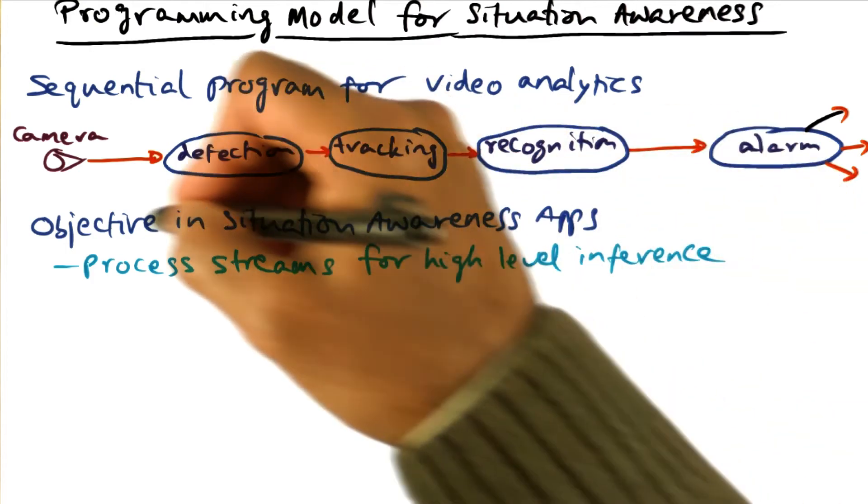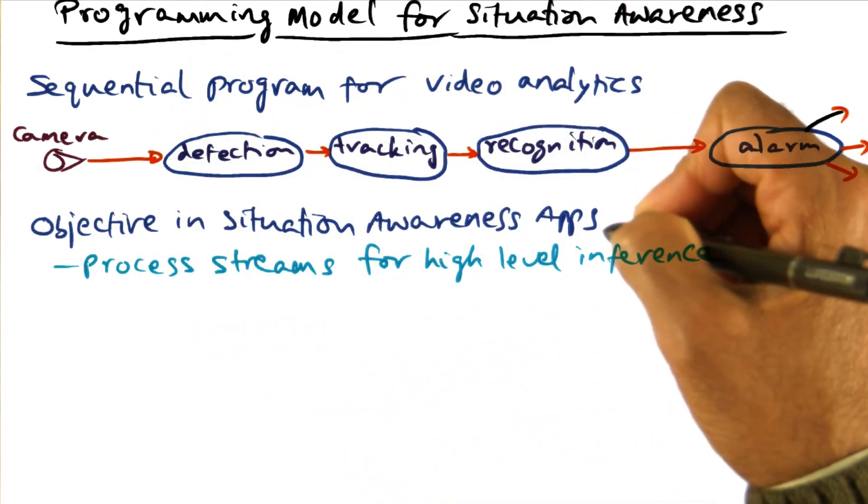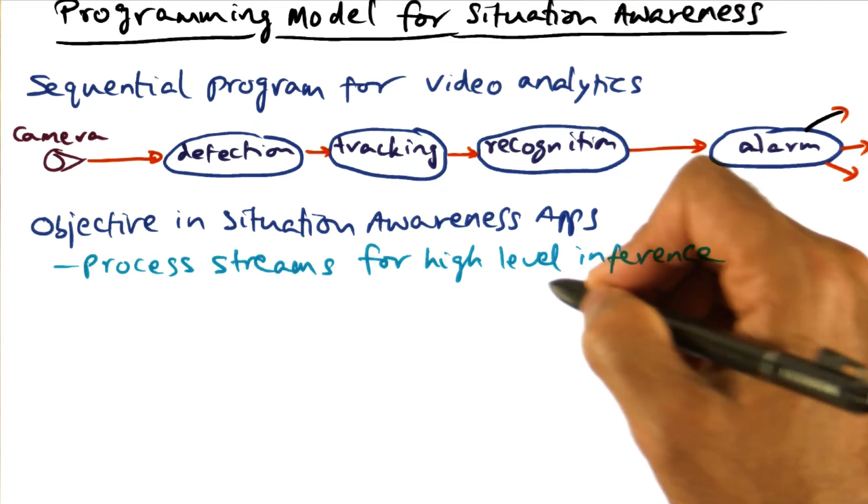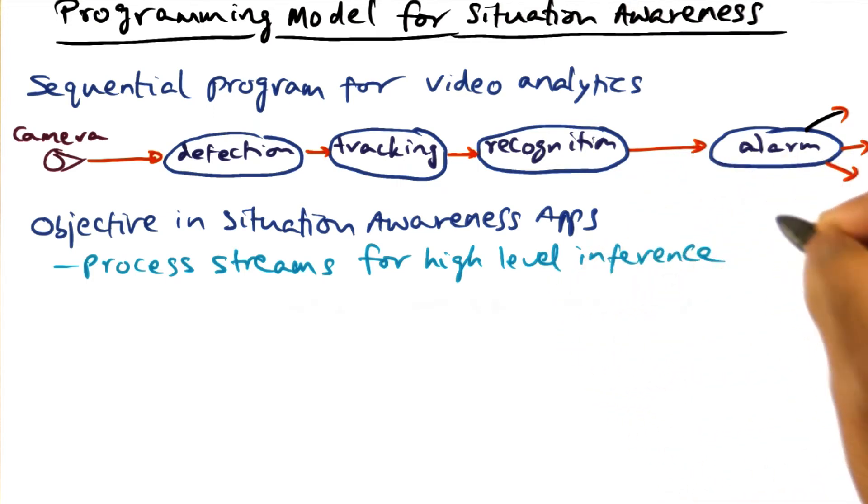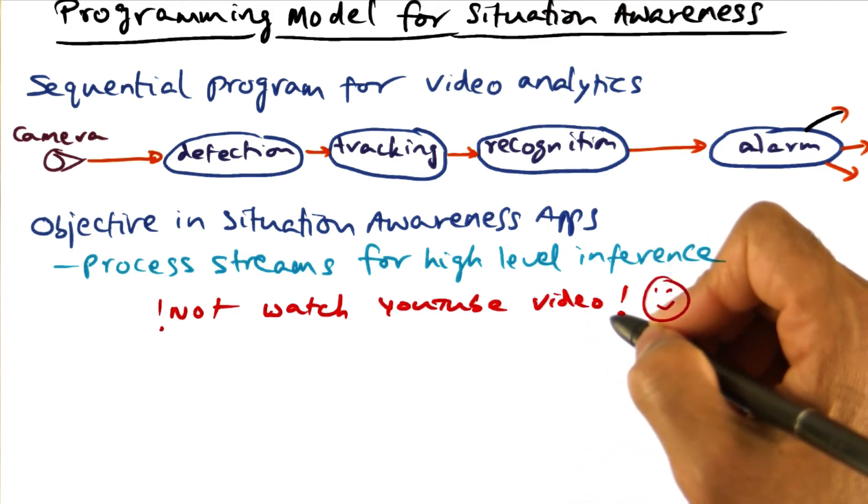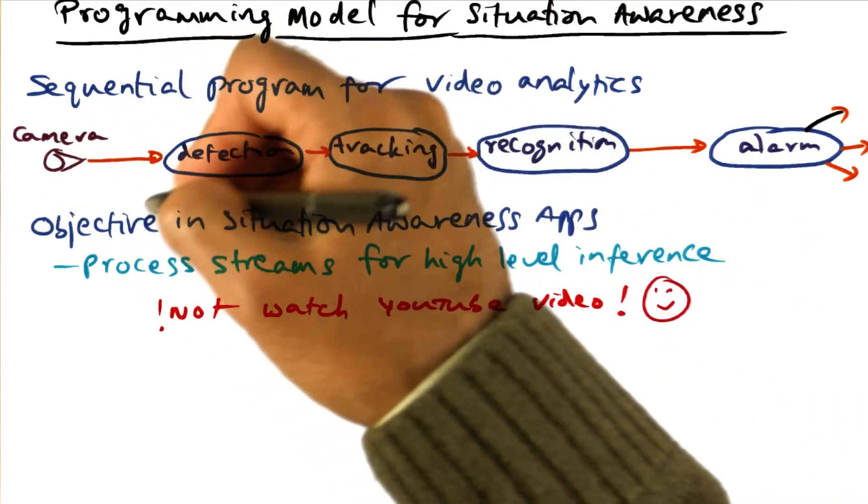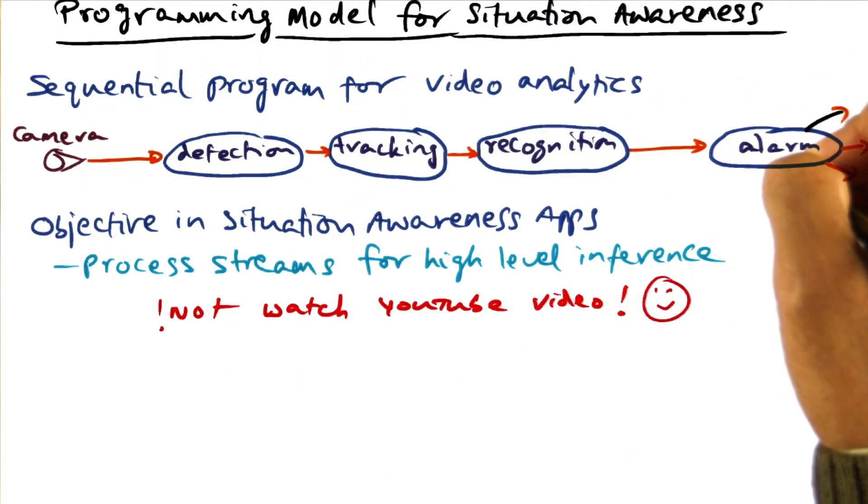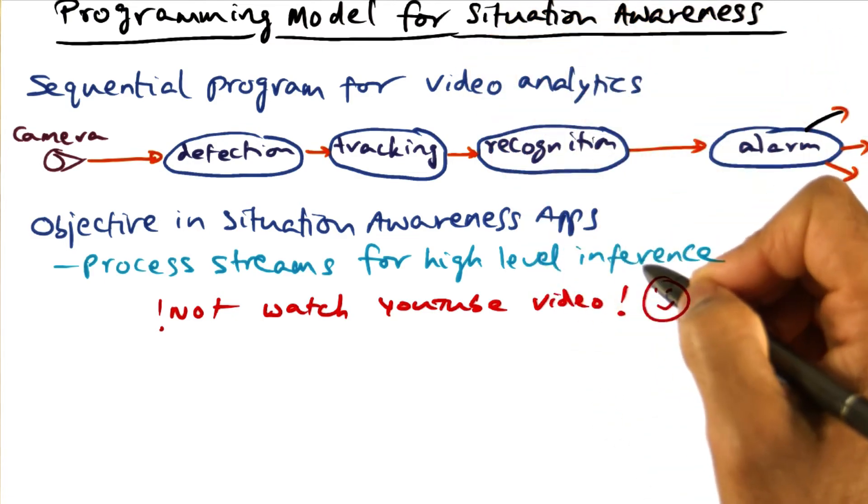So the objective in situation awareness applications is to process these streams of data for high level inference. In other words, we're not watching a YouTube video, but we're using the sensor streams to derive high level inference as to what is happening in the environment. That's what is the nature of situation awareness applications.